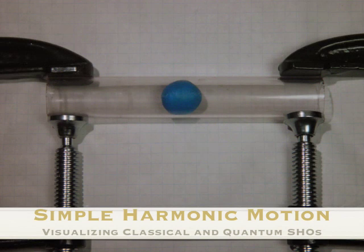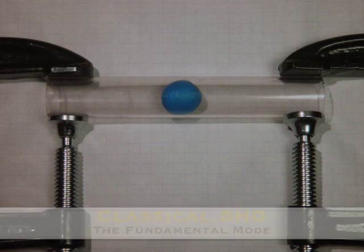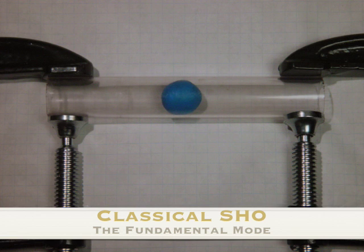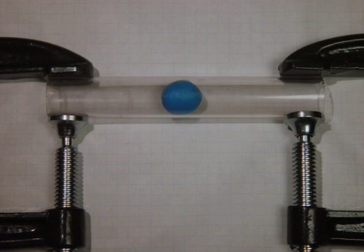This video is about visualizing both classical and quantum mechanical simple harmonic oscillators. We start with simple harmonic oscillators in the fundamental mode, which turns out to be the easiest one there is.